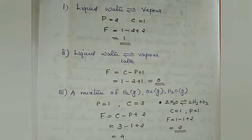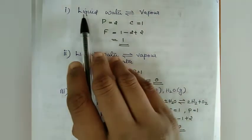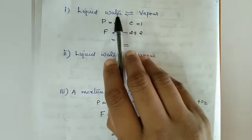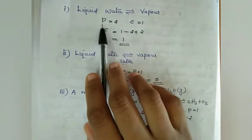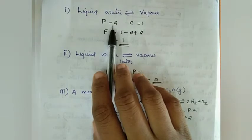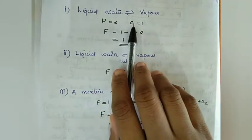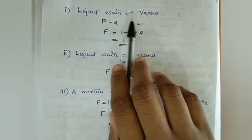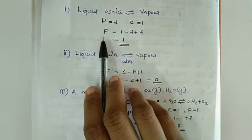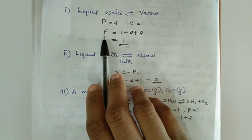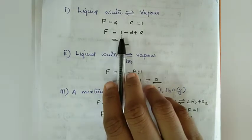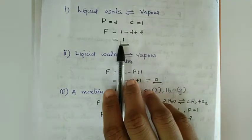By the phase rule or Gibbs phase rule, we can calculate the degree of freedom. For example, liquid water and water vapour are in equilibrium with each other. Here, the number of phases P = 2 — that is, liquid and vapour phase. The component C = 1. Then F = C - P + 2 = 1 - 2 + 2 = 1.